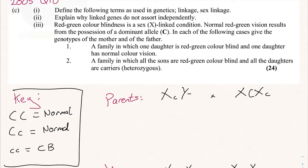The colorblind daughter got X small c from the dad and X small c from the mother — we know this because the Y chromosome isn't involved. For the other daughter with normal vision, she has X small c and X big C, making her heterozygous — she's a carrier. So the parents are: mother heterozygous (carrier), and father with red-green color blindness.